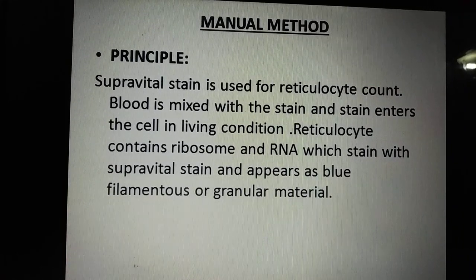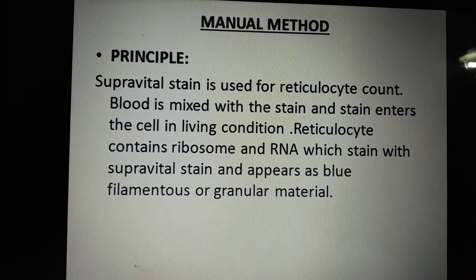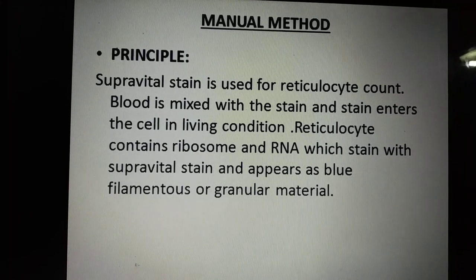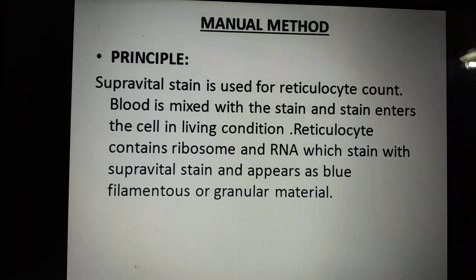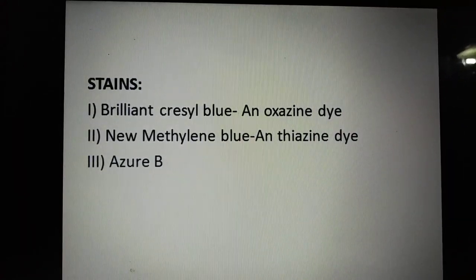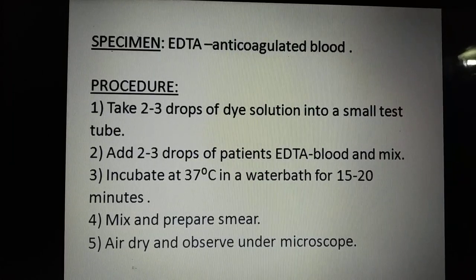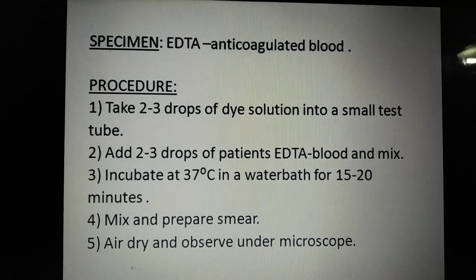Supra vital stain is used for reticulocyte count. Here, blood is mixed with the stain and the stain enters the cell in living condition — that is why it is called supra vital stain. Reticulocytes contain ribosome and RNA, which are stained with the supra vital stain and appear as blue filamentous or granular material. The stains used are brilliant cresyl blue and new methylene blue. We need anticoagulated whole blood. First, take two to three drops of dye solution into a small test tube.